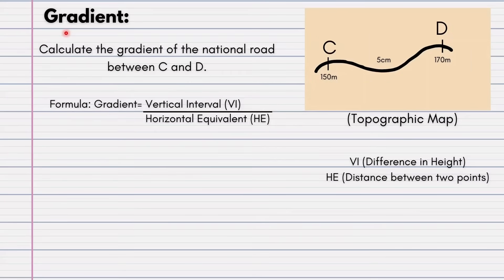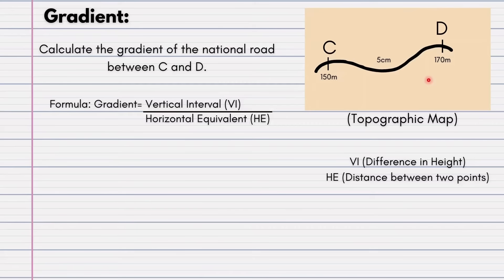Calculating gradient is pretty straightforward. It is only at the last step that it catches students off guard. The question asks: calculate the gradient of the national road between C and D. There is a slope where point C has a height of 150 meters and point D has a height of 170 meters, and the distance between them measures 5 centimeters on a topographic map. The formula for gradient is vertical interval (VI) over horizontal equivalent (HE).